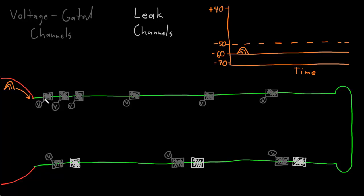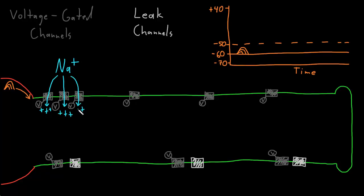This voltage-gated ion channel has a mechanism to sense this voltage change, and when the threshold potential is crossed, it's going to open. These are going to be sodium channels. The electrical and diffusion forces acting on sodium ions strongly drive them into the neuron. So when this voltage-gated sodium channel opens, sodium flows into the neuron, causing that part of the membrane to depolarize. This triggers an explosive chain reaction, opening voltage-gated sodium channels in the next piece of membrane in a wave that rapidly spreads down the axon.